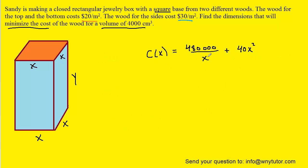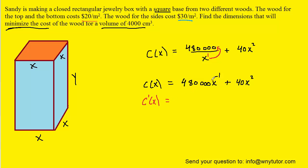We now have our cost function in terms of just one variable. To minimize cost, we calculate the derivative. It helps to move X from the denominator to the numerator first, making it X to the negative first power. Now we apply the power rule: pull the negative one in front to get negative 480,000 X to the negative 2, then bring down the exponent on the second term to get 80X to the first.